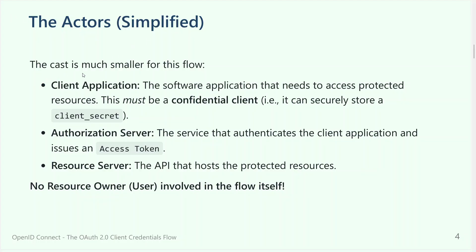What are the actors here? The cast is much smaller than the previous flows because there is no person. We have the client application — the software application that needs to access a protected resource, usually APIs. It's machine one that wants to access a resource server containing APIs, which is machine two. And you need a middleman to mediate and authorize: the authorization server, the service that authenticates the client — not a person — and issues an access token.